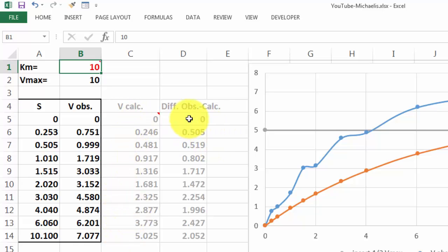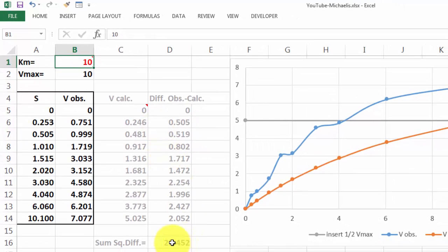Then we calculate the difference here, between observed and calculated, or observed and predicted, whatever you want. And then we square all those values and sum them. I did that here with the sum square function. But you can also square these and then sum them the normal way.